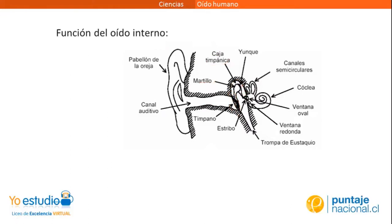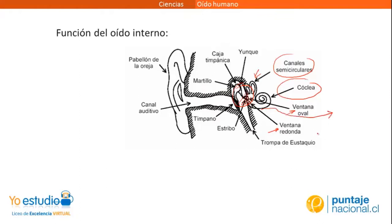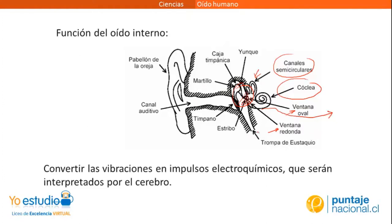Y el oído interno está compuesto por el vestíbulo, los canales semicirculares, que no tienen una función auditiva. Los canales semicirculares tienen la función de controlar nuestro equilibrio. También en el oído interno está la cóclea, que sí tiene función auditiva, y estas están conectadas con el vestíbulo a través de dos ventanas: la ventana oval y la ventana redonda. El vestíbulo simplemente transporta estas vibraciones que vienen del oído medio hacia la cóclea. Aquí en la cóclea, con su centro líquido, estas vibraciones se transforman en impulsos electroquímicos que viajan por el nervio acústico hacia el cerebro, que va a ser quien los va a interpretar como sonidos. Por lo tanto, la función del oído interno es convertir las vibraciones en impulsos electroquímicos para que el cerebro lo interprete como sonido.